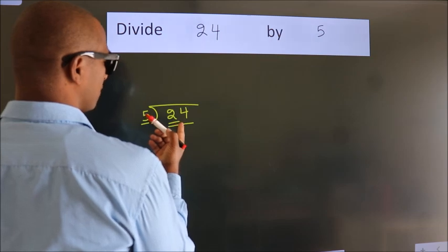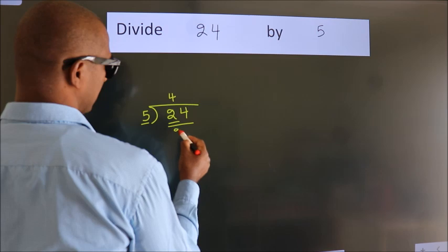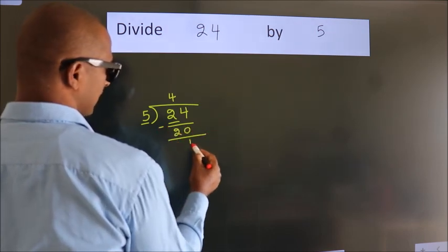A number close to 24 in the 5 table is 5 fours, 20. Now we should subtract. We get 4.